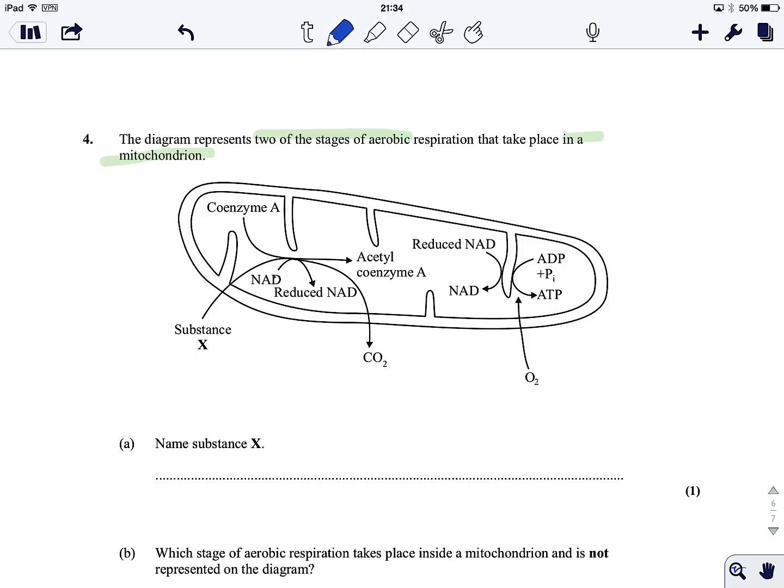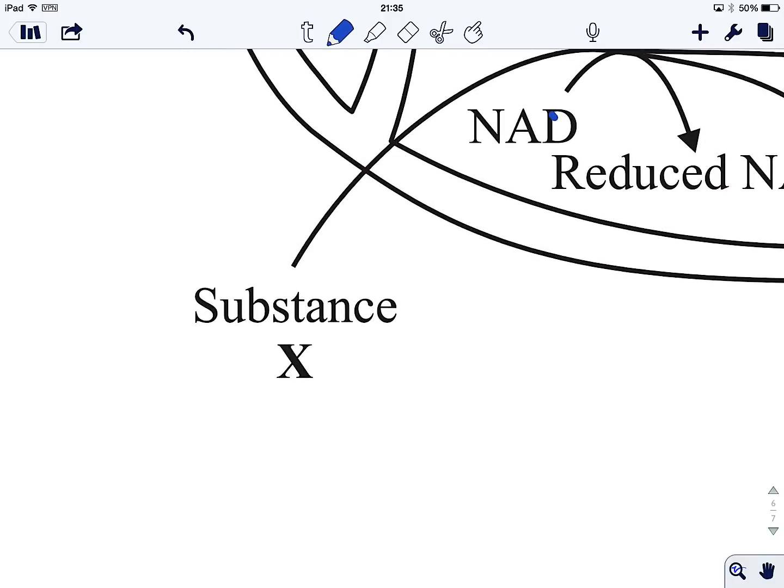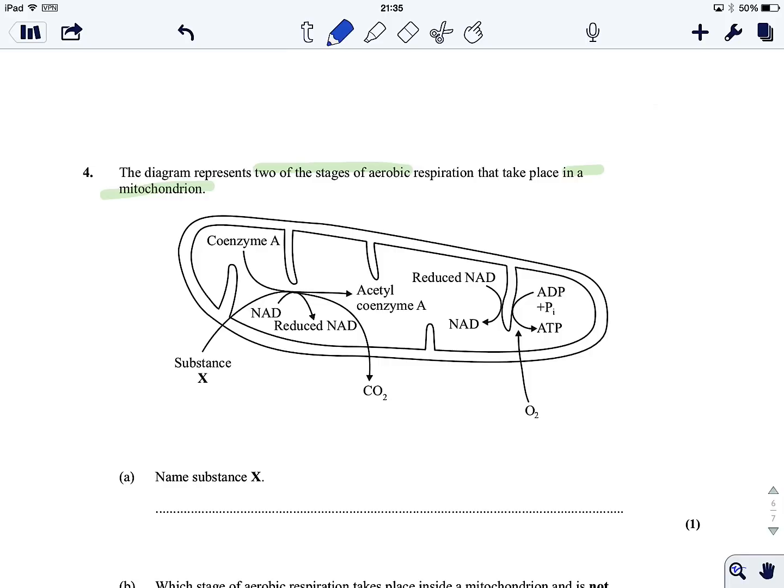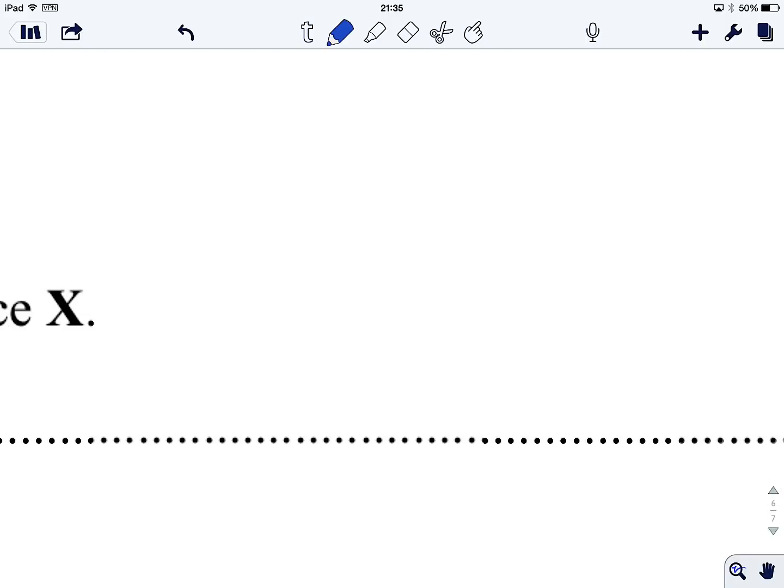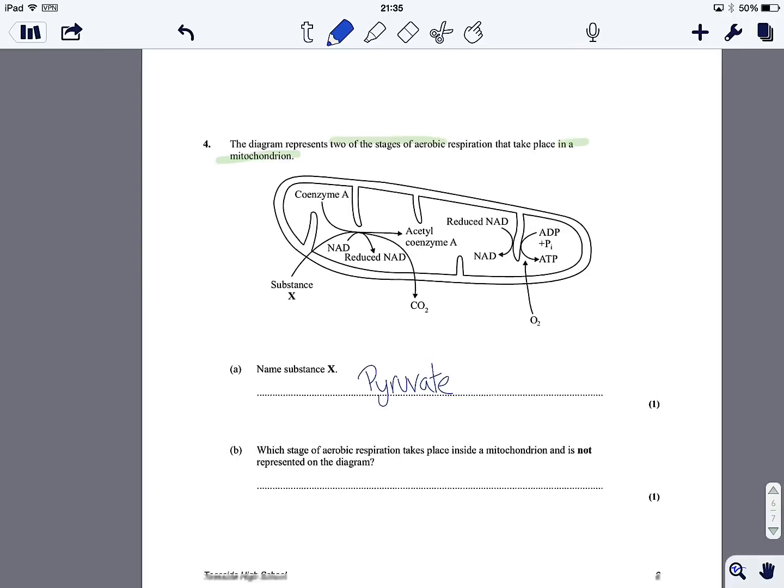So for question A, it's going to ask us to name substance X. So there's substance X entering the mitochondrion. So first of all we must be thinking, the only thing that can enter the mitochondrion, the only thing we've got transport proteins for is pyruvate, which is the end product of glycolysis. So there we go, that's our first answer there, pyruvate.